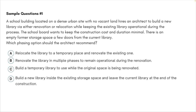When I look at this question, I highlight a few things. One is 'dense urban site with no vacant land' — this tells me I don't have enough adjacent space to relocate and come back. So option A, which says relocate the library to a temporary place, cannot be correct, because the library should remain operational and I don't have another location to build while the existing one is under construction. Option A should be eliminated immediately.